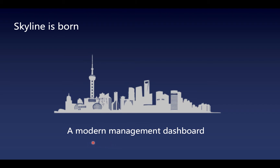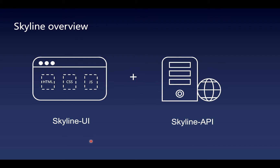Skyline is launched as a modern management dashboard and it contains two parts. The first part is Skyline UI, a management dashboard built with React.js as a core, and it runs on the browser. Skyline API is an HTTP service that provides the necessary APIs for Skyline UI.